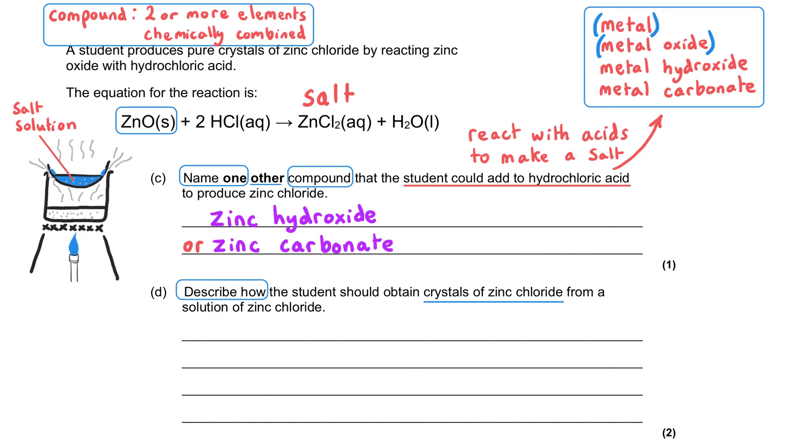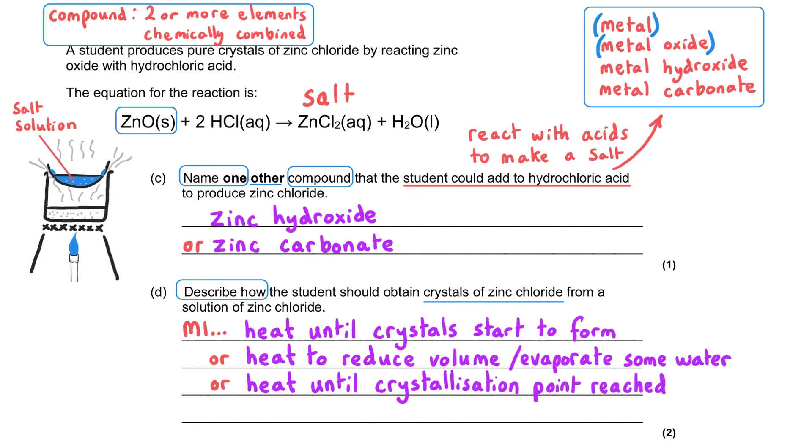First, we need to heat our solution until crystals start to form. We would probably do that over a water bath rather than heating the solution directly. We could say heat the solution to reduce the volume or to evaporate some of the water, or heat until the crystallization point has been reached. Any of those three options is fine. Then our second mark is for saying we would turn off the heat, take our solution, and leave it to cool or leave it to crystallize.